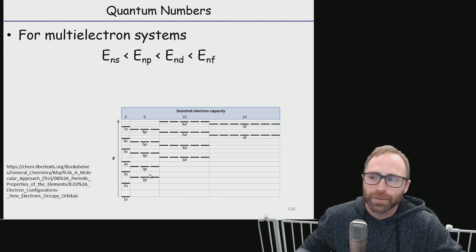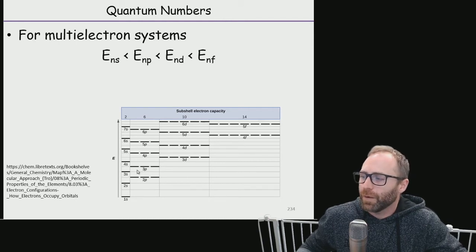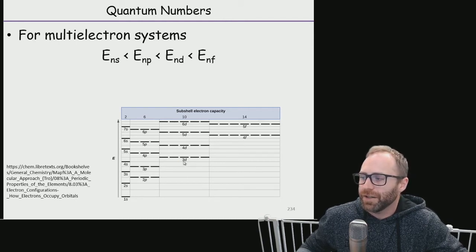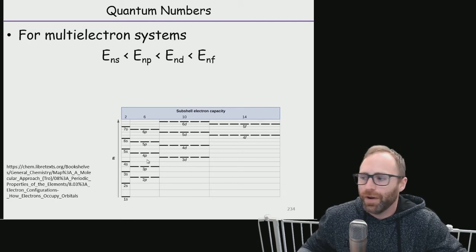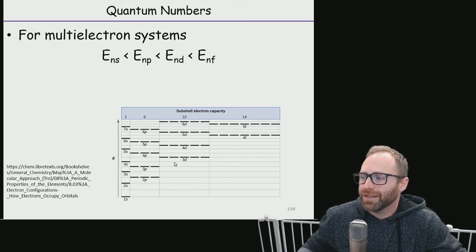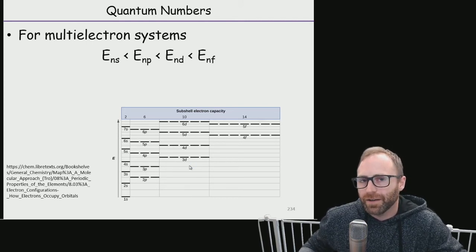This holds true if we go up to the 3, so 3s is lower energy and 3p is lower energy than 3d. Now you might be looking over here and say, yeah, the 3d is higher in energy than the 3p, but the 4s is lower in energy than the 3d. Yeah, that's true, absolutely true.